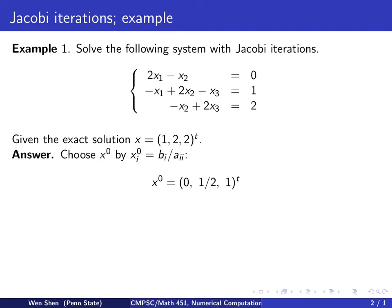So we start by finding an initial guess for our iteration. We will use the smart choice since this is a diagonal dominant system. The i-th initial guess is computed by the right-hand side divided by the diagonal element. So this gives me 0, that's 0 over 2, and 1 over 2 gives me a half, and 2 over 2 gives me 1.